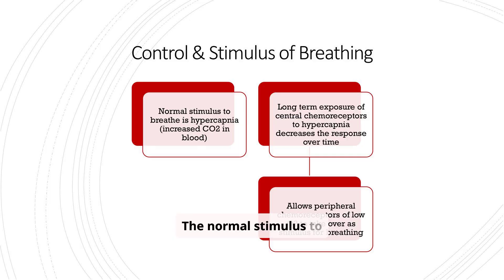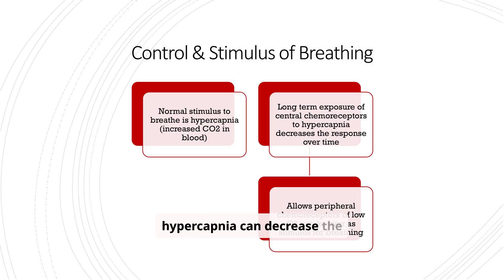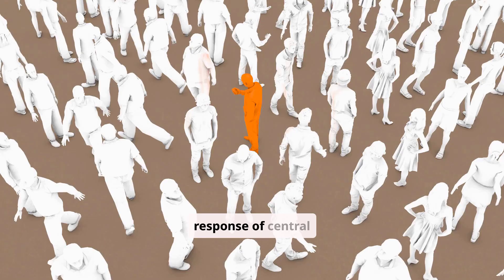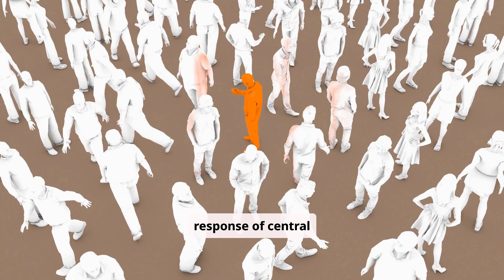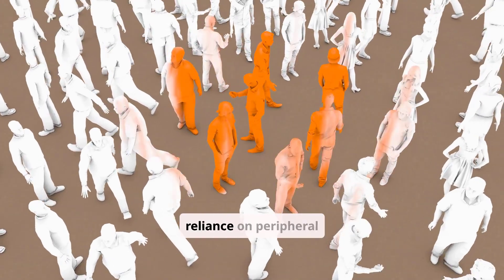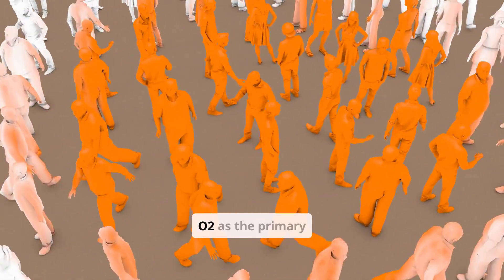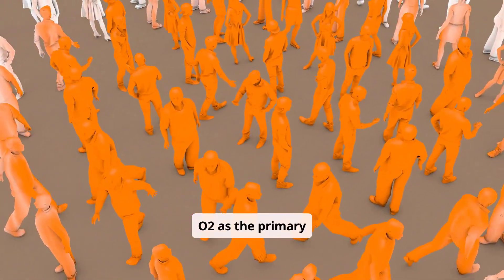The normal stimulus to breathe is hypercapnia, or increased CO2 in the blood. However, long-term exposure to hypercapnia can decrease the response of central chemoreceptors, leading to a reliance on peripheral chemoreceptors and low O2 as the primary stimulus.